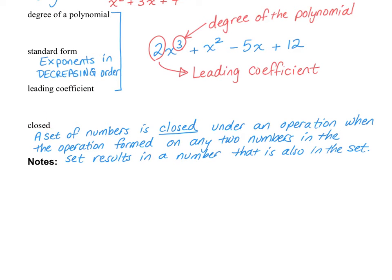The term 'closed' — I'm not going to be using this a lot in this class, but I did want to introduce the concept. Closed means that if you have a set of numbers and you perform an operation like adding, subtracting, multiplying, or dividing on any two numbers within the set, and the result is also in the set, then it is closed. If the result is not in the set, then it is not closed. The easiest way to understand this is by looking at examples.